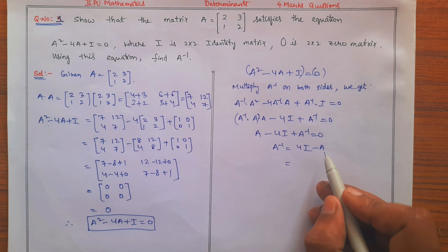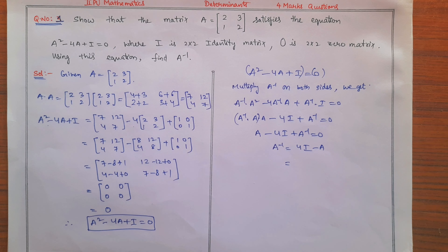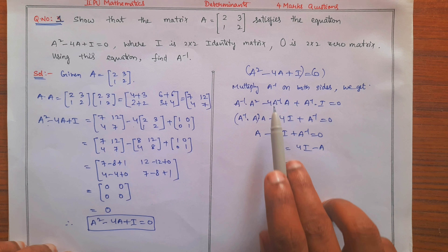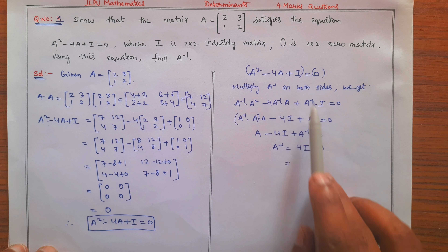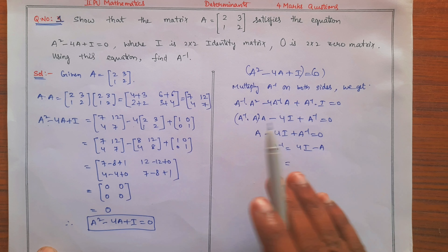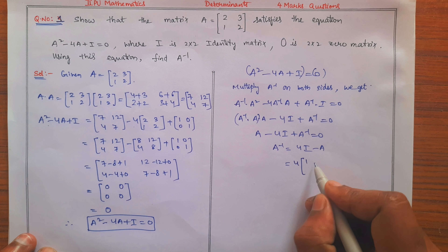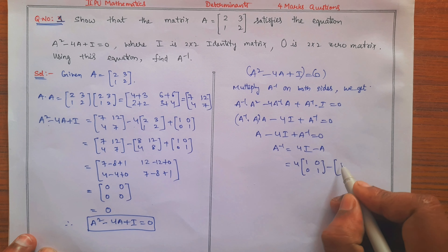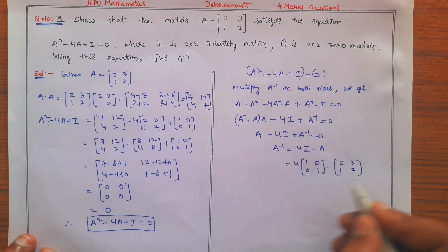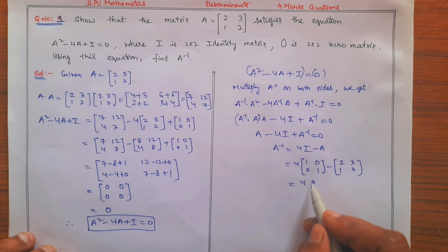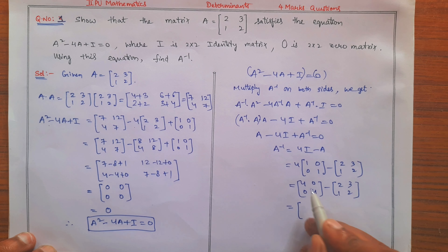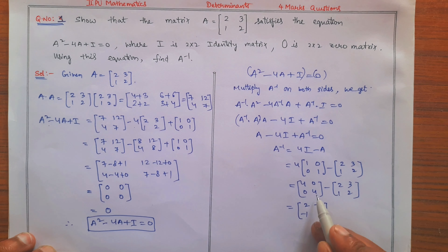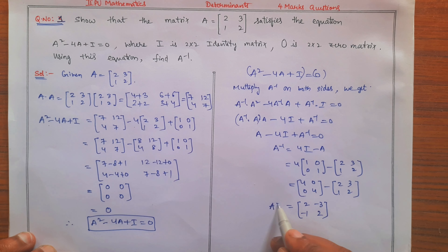So A inverse = 4I − A = 4×[1,0;0,1] − [2,3;1,2] = [4,0;0,4] − [2,3;1,2]. Subtracting corresponding elements: 4−2=2; 0−3=−3; 0−1=−1; 4−2=2. Therefore A inverse = [2,−3;−1,2]. This is the answer found without using the standard inverse formula.